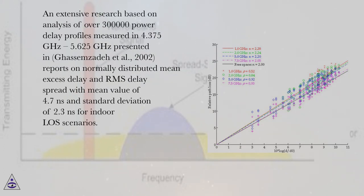An extensive research based on analysis of over 300,000 power delay profiles measured in 4.375 gigahertz to 5.625 gigahertz presented in Ghasemzadeh et al., 2002, reports on normally distributed mean excess delay and RMS delay spread with mean value of 4.7 ns and standard deviation of 2.3 ns for indoor LOS scenarios.